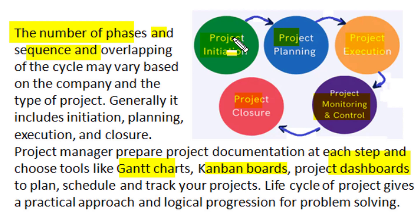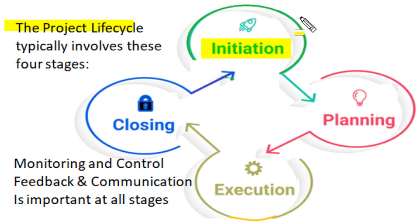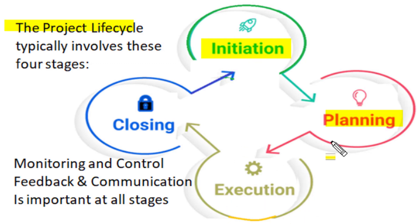This sequence of different stages or lifecycle of a project gives a practical approach and a logical progression for achievement of end goals in any project or problem-solving exercise. In general, the project lifecycle typically involves four stages: the project is identified and preliminary cost-benefit analysis decides initiation of the project, then appropriate planning is done to execute the project as per the assigned scope with best utilization of time and resources. Execution is the visible part of project management where major work is actually performed, and ultimately when end results are achieved, the project is successfully closed.